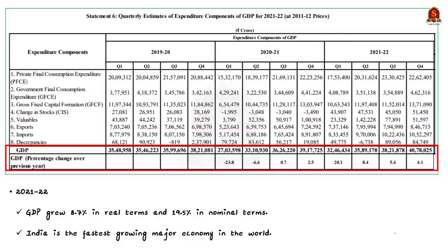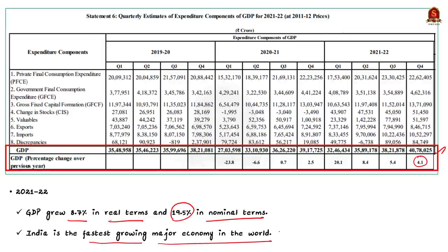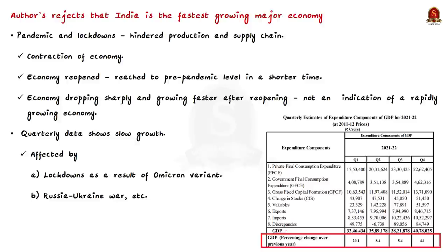Real GDP for Q4 of 2021-22 is estimated at 40.78 lakh crore rupees with 4.1% growth. So overall, GDP grew 8.7% in real terms and 19.5% in nominal terms for 2021-22. These are huge numbers, and thus it is claimed that India is the fastest growing major economy in the world. But the author contests this claim due to many reasons.